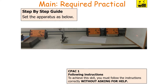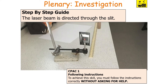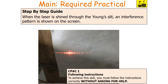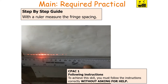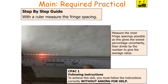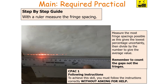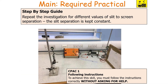Set up the apparatus with your Young's slit, laser, and screen. Direct the laser beam through the slit to produce an interference pattern on the screen. Use a ruler to measure the fringe spacing — measuring across the most fringes possible gives the lowest percentage uncertainty. Divide the total measured distance by the number of spacings to get an average value. Remember to count the gaps, not the fringes. Repeat the investigation for different values of slit-to-screen separation while keeping the slit separation constant.